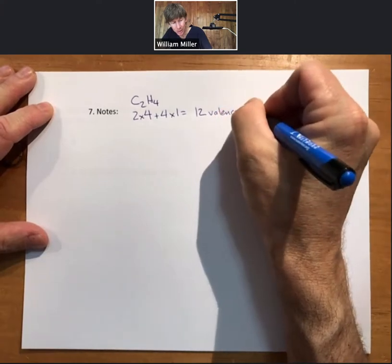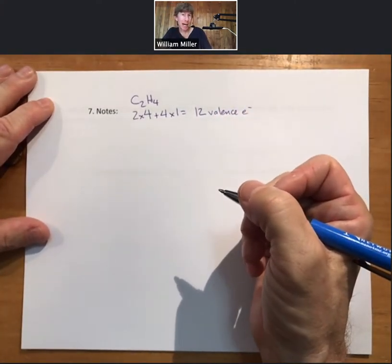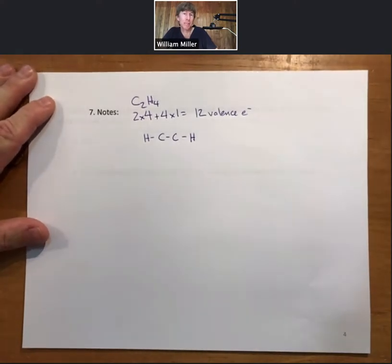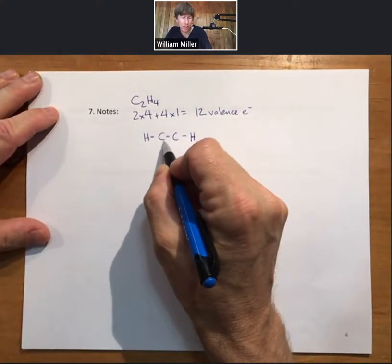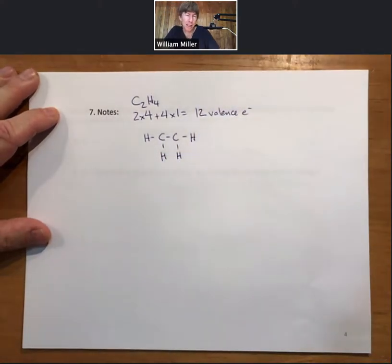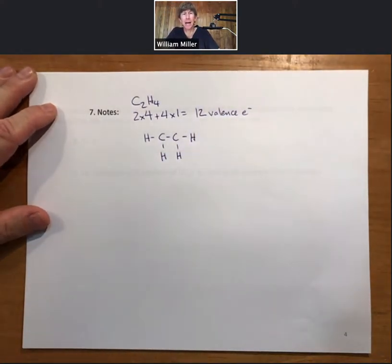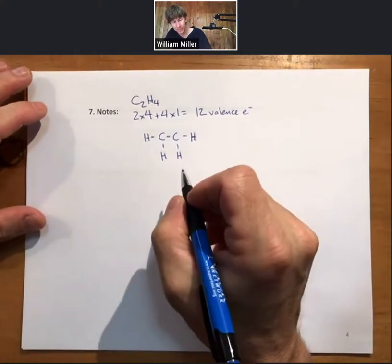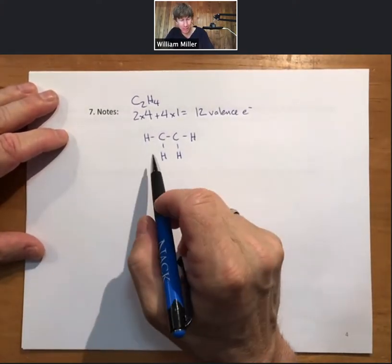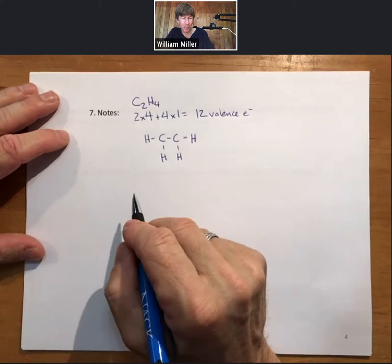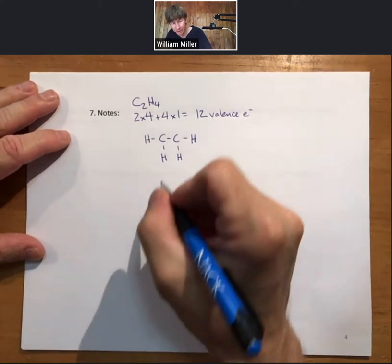We need to put those 12 electrons into our Lewis structure. Hydrogen cannot be a center atom. With two carbons in a molecule, they tend to be connected to each other with the H's around them — a general trend for Chem 1010: if there's more than one carbon, start by hooking those carbons together. Connecting our carbons and hydrogens uses 10 electrons; we have two more to place.